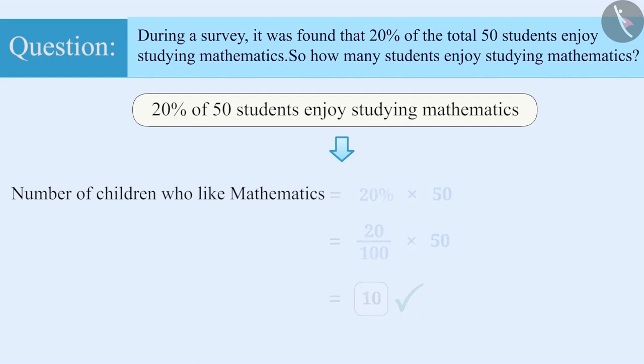Sometimes, the total number is divided by percent and multiplied with 100 to find the number of students who enjoy studying mathematics. For instance, here 50 is divided by 20 and then multiplied by 100 to give the result 250, which is the wrong answer.